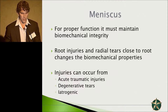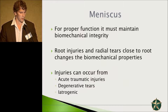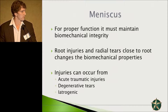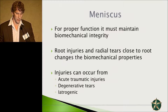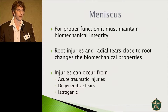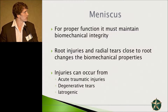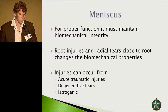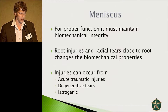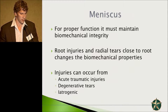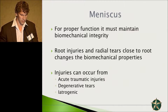We've touched on it multiple times today. For proper function the meniscus must maintain its biomechanical integrity. Root injuries and radial tears close to the root really change the biomechanical properties as we have seen. These injuries can occur from acute traumatic injuries such as in the last presentation, and also degenerative tears. We'll briefly touch on iatrogenic injuries to the meniscal root, specifically the anterior root.